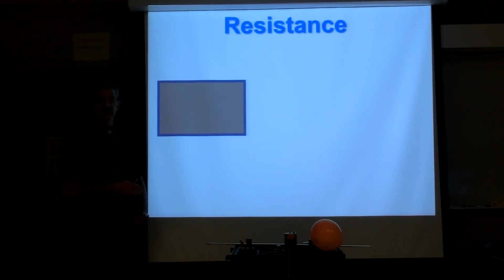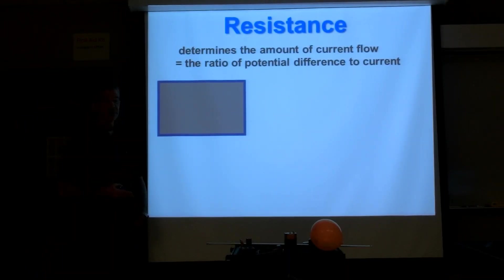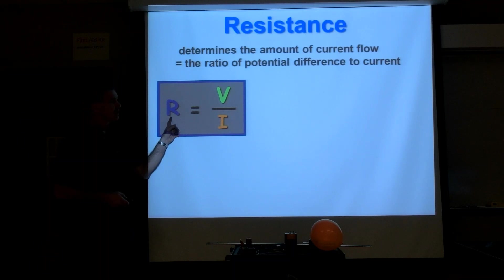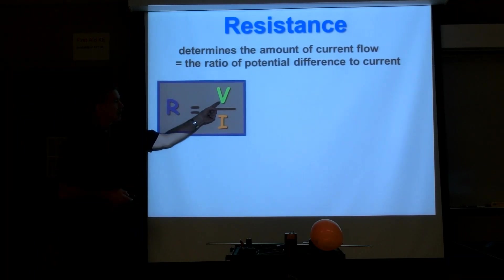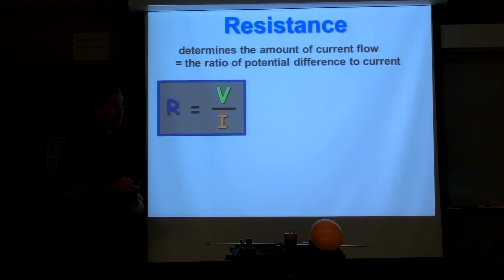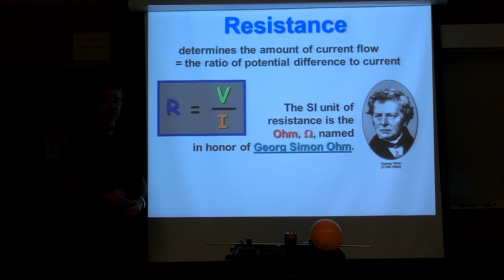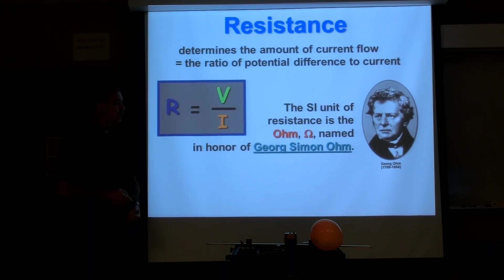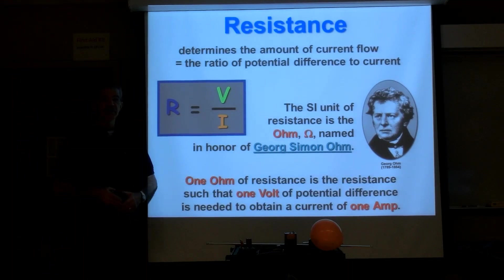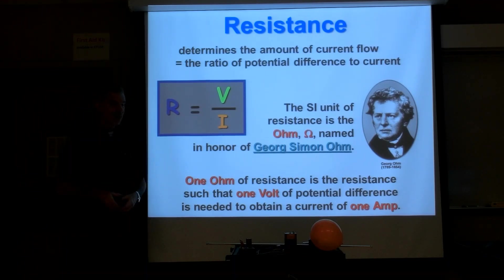The last term is resistance. Resistance is what determines the amount of current flow — it's the ratio of potential difference to current. Resistance R equals V over I. V is measured in volts, I is measured in amps, and volts over amps gives us a unit called the ohm of electrical resistance, named after George Simon Ohm who lived through the mid 1800s. An ohm of resistance is the amount of resistance such that it would take one volt to produce one amp of current.